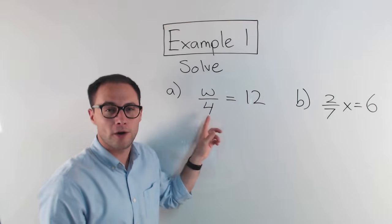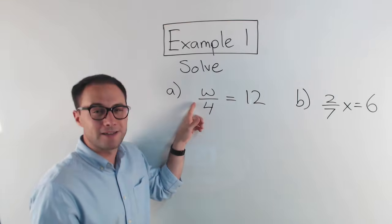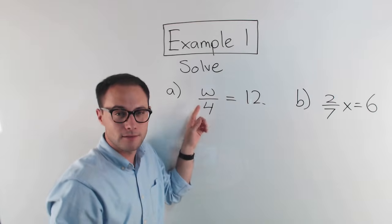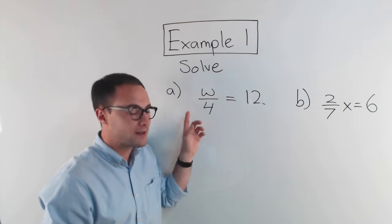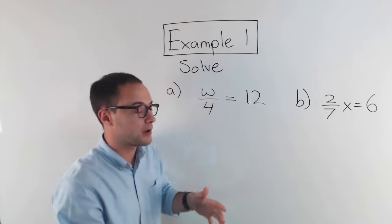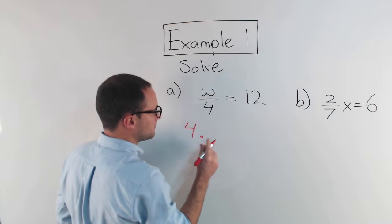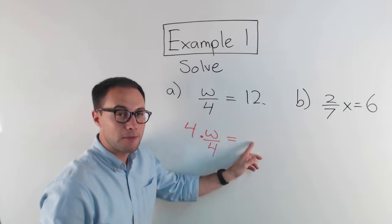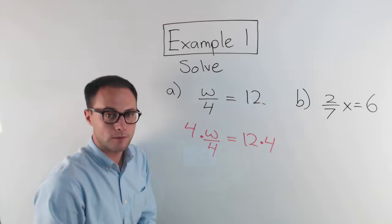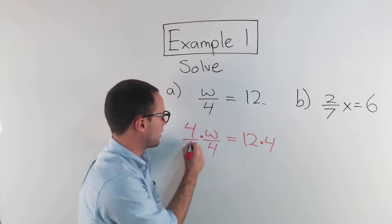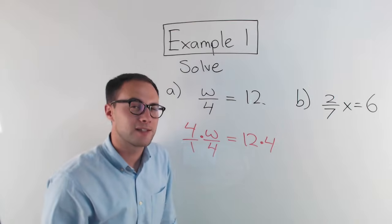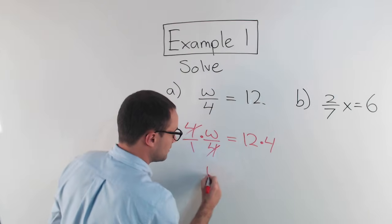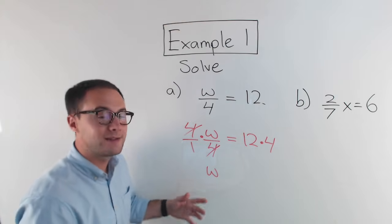So our first equation: w over 4 is equal to 12. Well, w is being divided by 4. I'm going to focus on the variable first. What's the opposite of division? It's multiplication. So to undo that divided by 4, I'm going to multiply by 4. So 4 times w over 4 is equal to 12 times 4. That 4 cancels out with that 4, and I'm left with w over 1, which is just w. That's perfect — I wanted w alone.